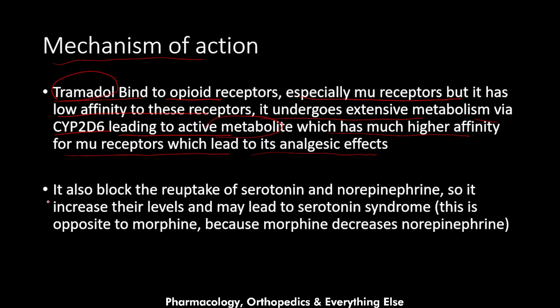Tramadol also blocks the reuptake of serotonin and norepinephrine, increasing their levels and potentially leading to serotonin syndrome. This is the opposite of morphine, which decreases norepinephrine. The elevated serotonin and norepinephrine levels lead to the neuropsychiatric effects that will be discussed in the adverse effects section.